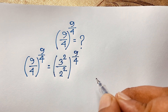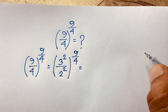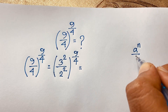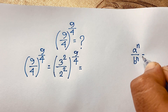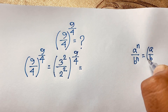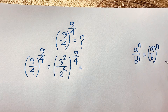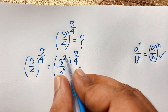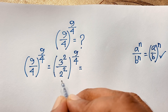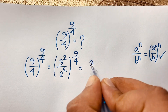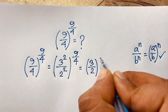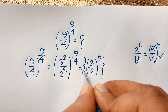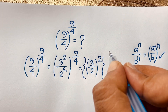Now we use the exponential law: a^n over b^n equals (a/b) whole to the power n. If I apply this formula here, the exponent is 2 for both numerator and denominator, so n equals 2. This gives us (3/2) whole to the power 2, raised to the power 9/4.